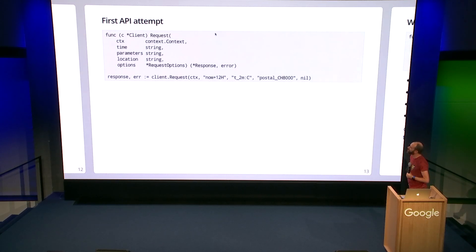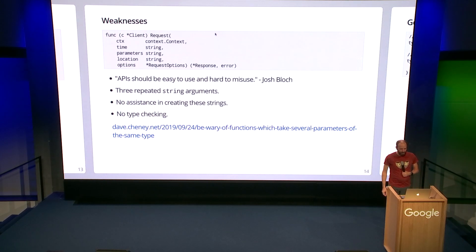The first attempt looks like this. We want to send a request. We pass time, parameters, and location all three as strings. This is what an example request might look like for getting the temperature two meters above the ground 12 hours from now in Zurich. This, however, has quite a lot of weaknesses. There's a nice blog post by Dave Cheney that you might have read to be aware of functions which take several parameters of the same type. This API is easy to misuse. We have no type checking here. We get the order of parameters wrong. We get no warnings from the compiler. We'll find out later when we get error messages from the server. There's no assistance in creating these fairly complex strings. There's no type checking. This is not a great API.